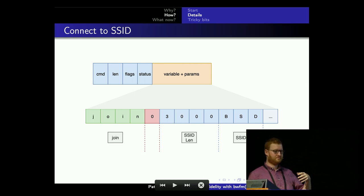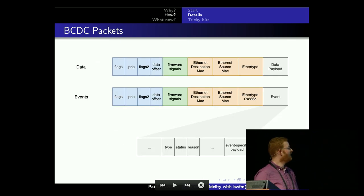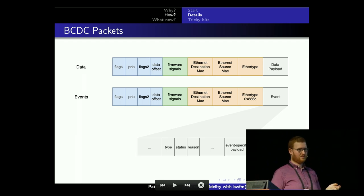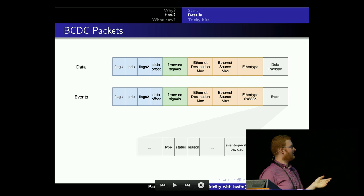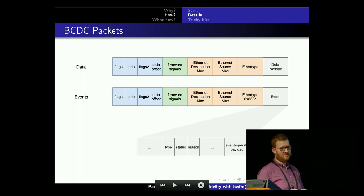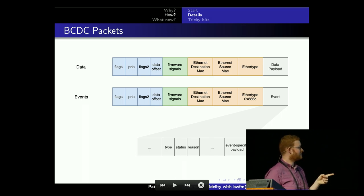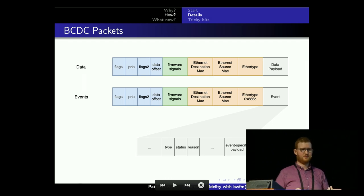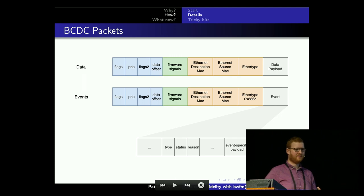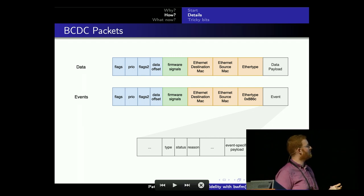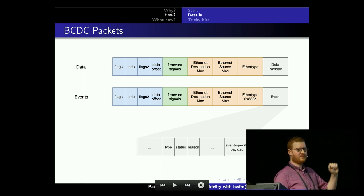Once you do a scan, you get all the events. The events and data are essentially Ethernet packets — they're Ethernet packets with a prepended BCDC header, and in between there are firmware signals. The most important part of the BCDC header is the data offset, which tells you where the actual Ethernet data starts. Events are also just Ethernet frames: 'I have seen a node,' 'I have associated,' 'I have authenticated.' All that WiFi state information is transferred to you as the driver as Ethernet packets, using a specific EtherType for events.